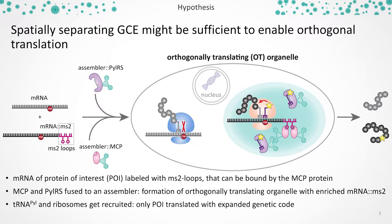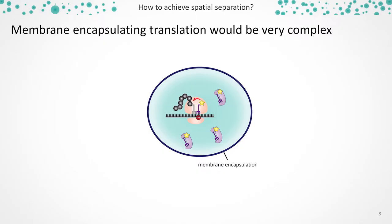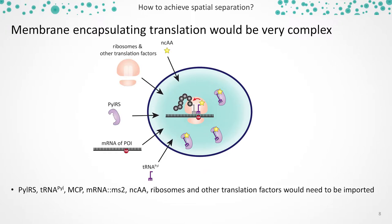So how can you create such an organelle? The first thing that would come to mind in a eukaryotic cell might be membrane encapsulation. However, translation is a very complex process that requires hundreds of factors to work together. You would not only need to import ribosomes and other translation factors on top of your genetic expansion system, but you would also need to export your protein afterwards, requiring a very complex dedicated transport machinery.